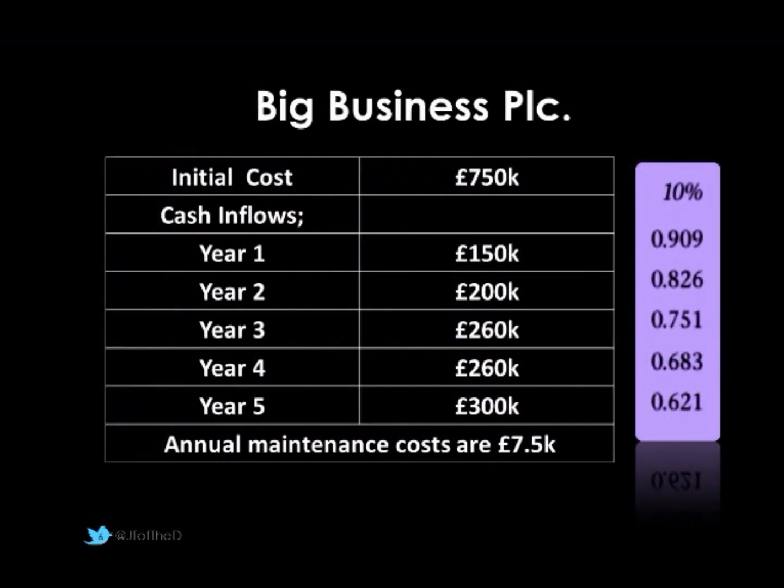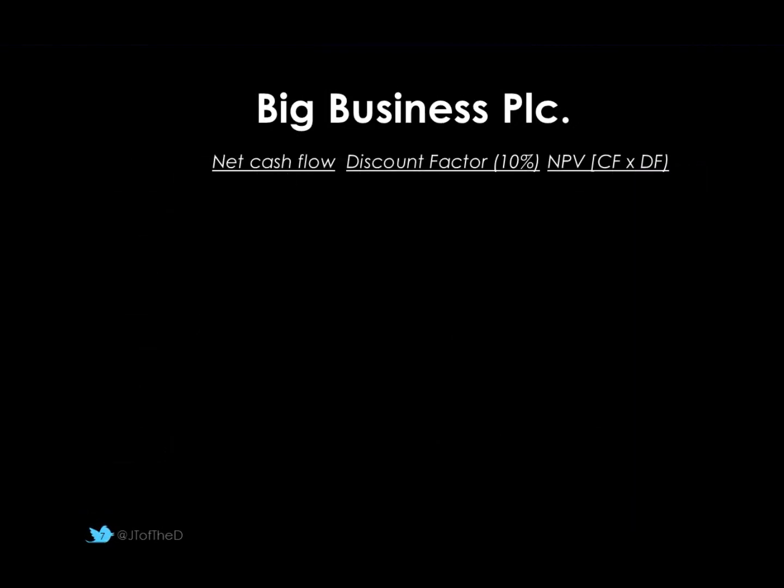So how does it look in an exam? Let's get back to Big Business PLC — the example used for payback and average rate of return. You'll notice in the purple box on the side we have our discount rates — we're going to stick at 10%. We've got an initial cost of £750,000, then cash inflows for five years, as well as a cash outflow of £7,500 each year. So how do we lay this out?